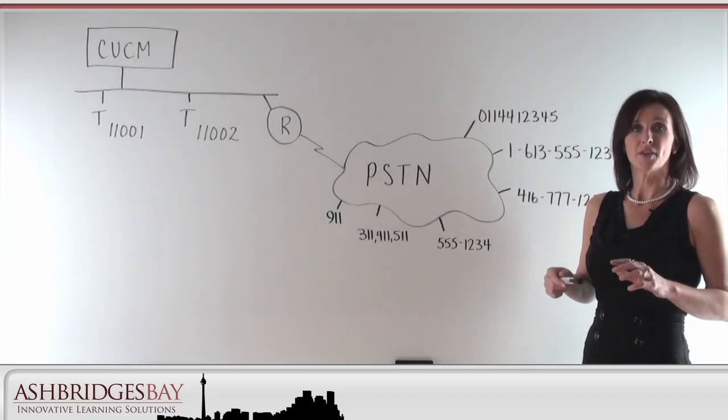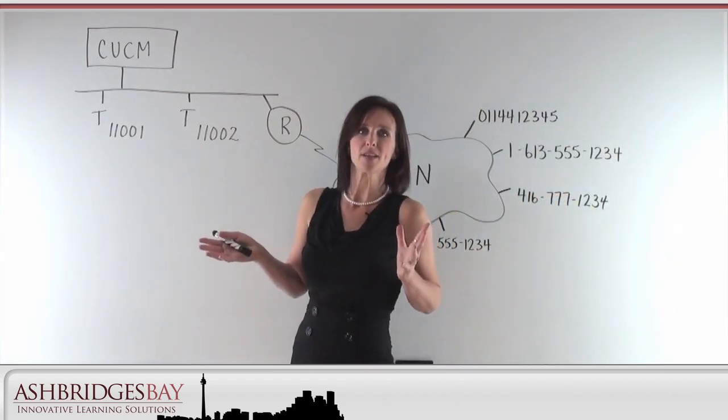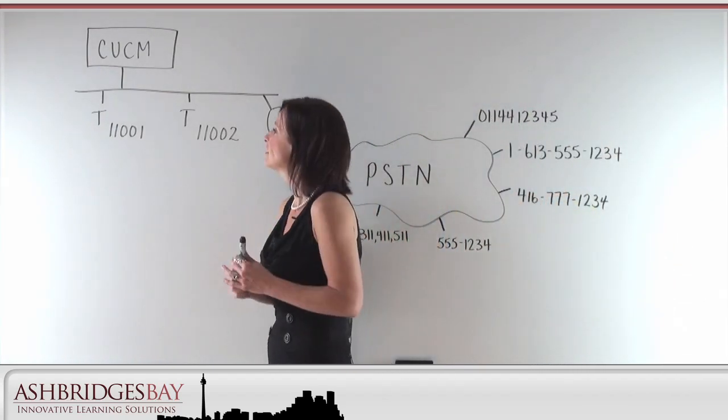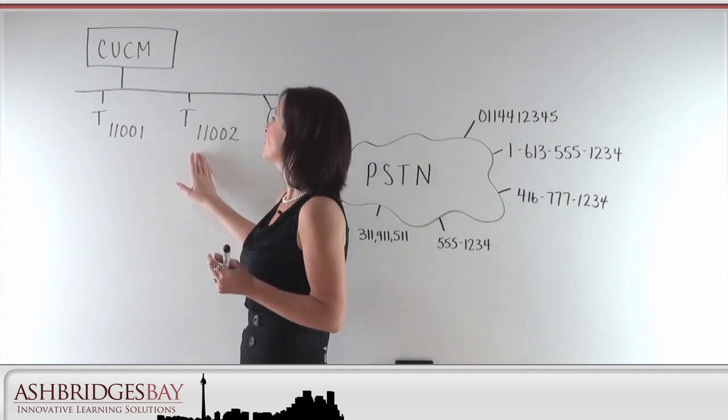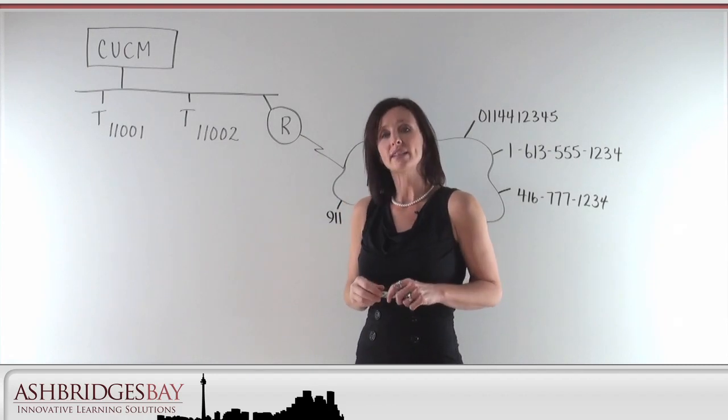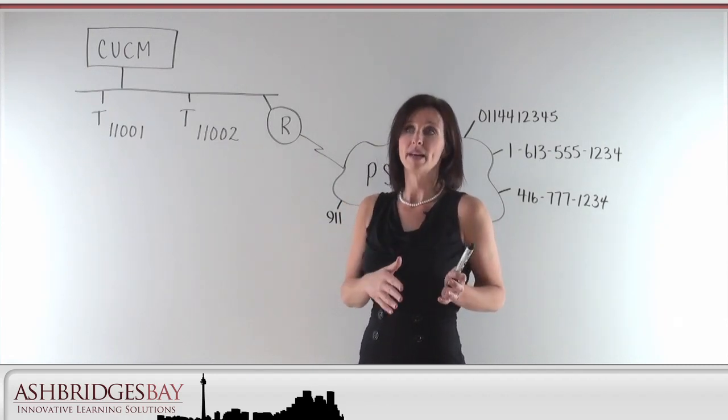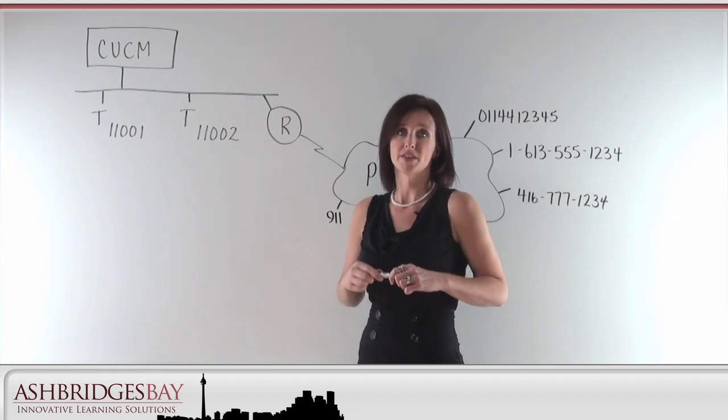What I have drawn on the whiteboard is a diagram of a phone network. Let's imagine that this is your company. We'll call it company XYZ so as not to play favorites. Here we have two employee telephones at extension 11001 and 11002. You'll note throughout the lessons that our examples have five-digit extensions. Your company may have four digits or more for their internal extensions.